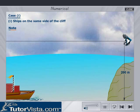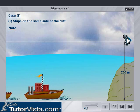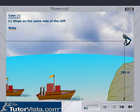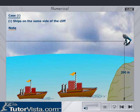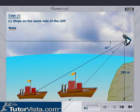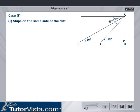Case 1: Ships on the same side of the cliff. Observe the picture carefully. In the figure, the cliff AB equals 200 meters.